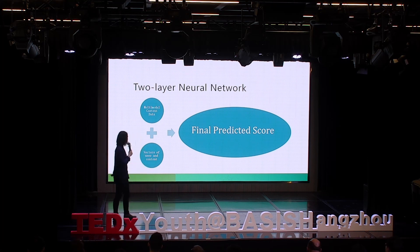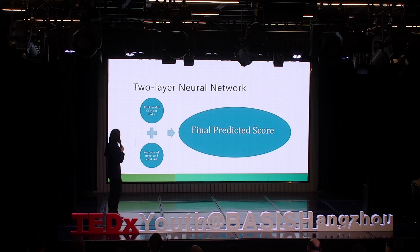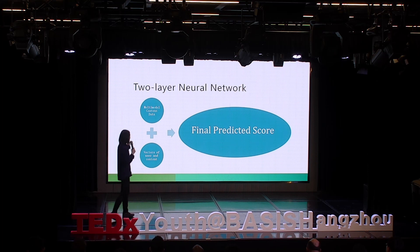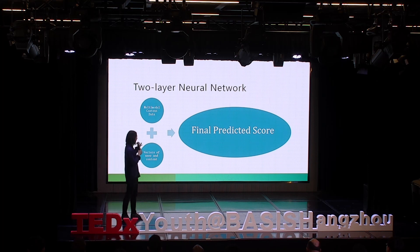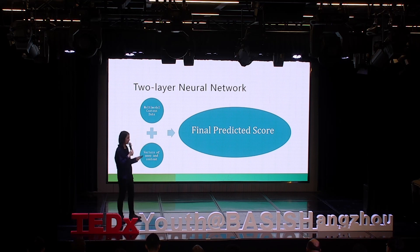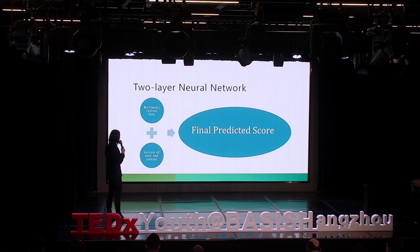Basically, what we are doing here is putting in the multi-modal content data and the vectors of user and content obtained from M3. Eventually, everything feeds into a neural network that calculates the weight of each expected rating. In the end, we produce a final predicted score.